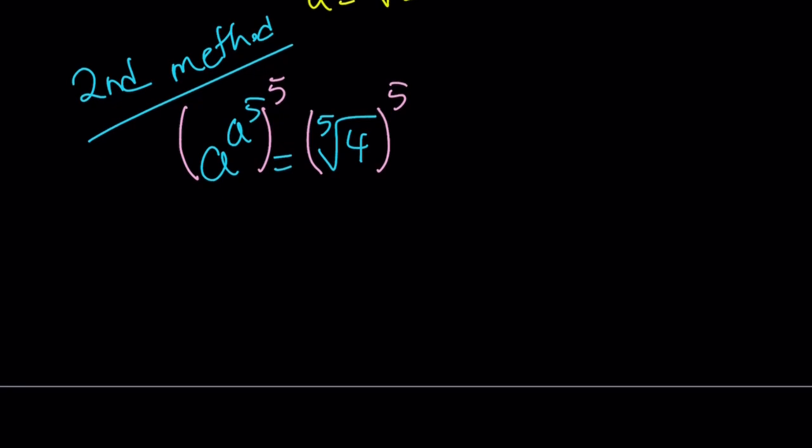So, this is going to give us, when you raise a power to another power, you're going to multiply them. So, this is going to become a to the power 5a to the fifth equals 4. The fifth root and the fifth power, they cancel each other out.